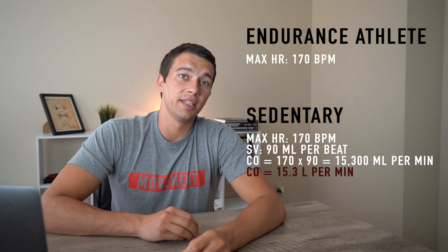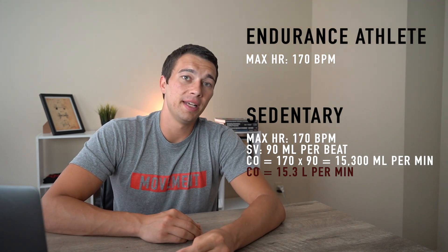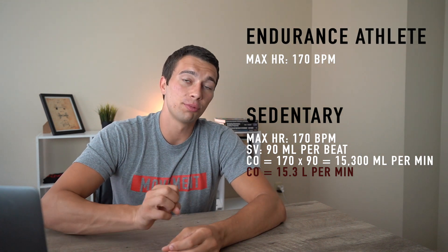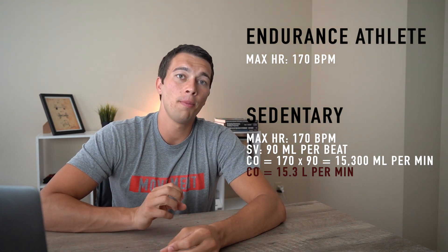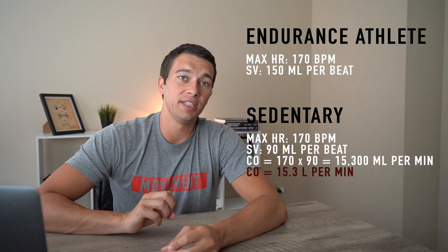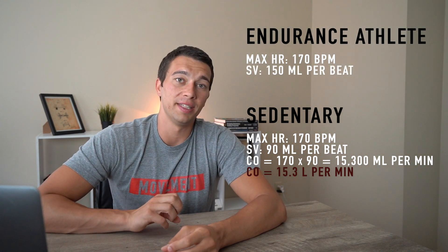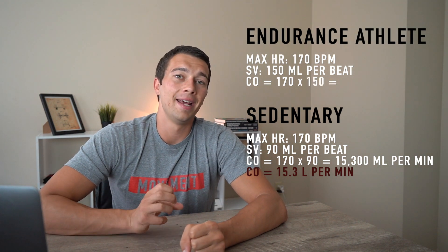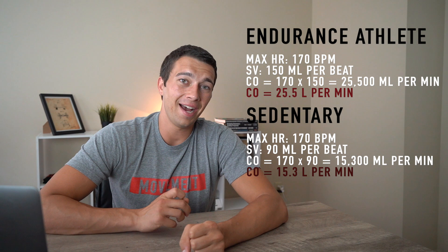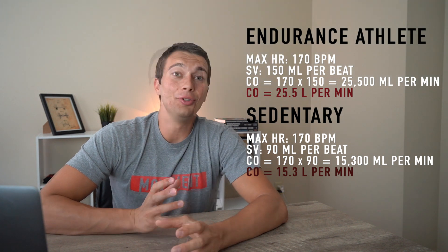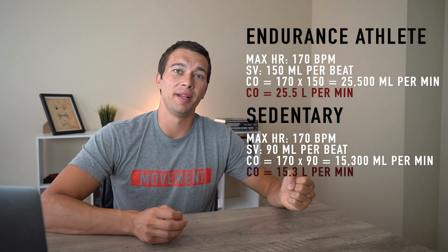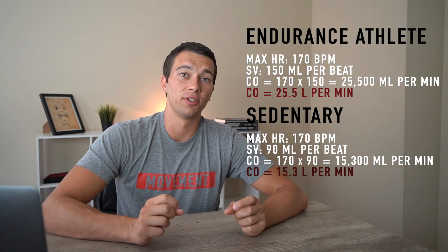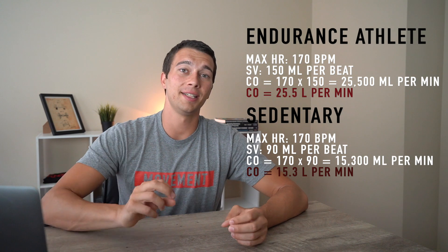An endurance trained athlete running at the same 170 beats per minute will have a higher stroke volume because they have a bigger heart chamber and can push more blood out of their left ventricle — say 150 milliliters per beat. So 170 beats per minute times 150 milliliters gives a cardiac output of around 25.5 liters per minute. You can imagine delivering 15 liters versus 25 liters per minute means significantly more oxygen delivery.